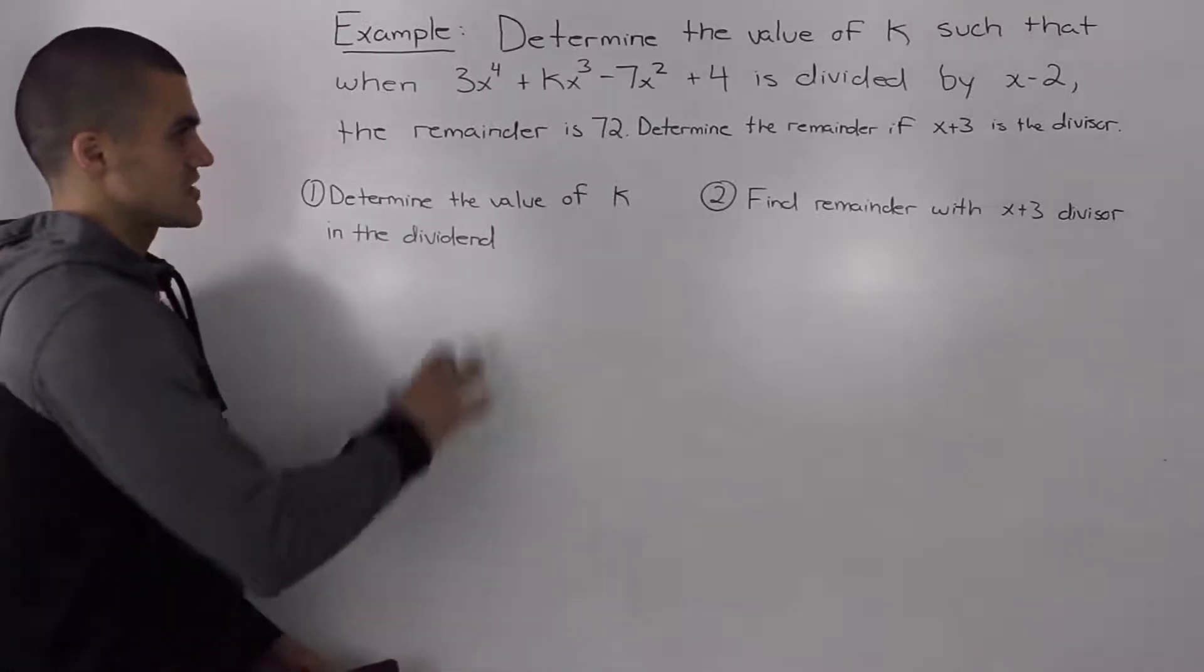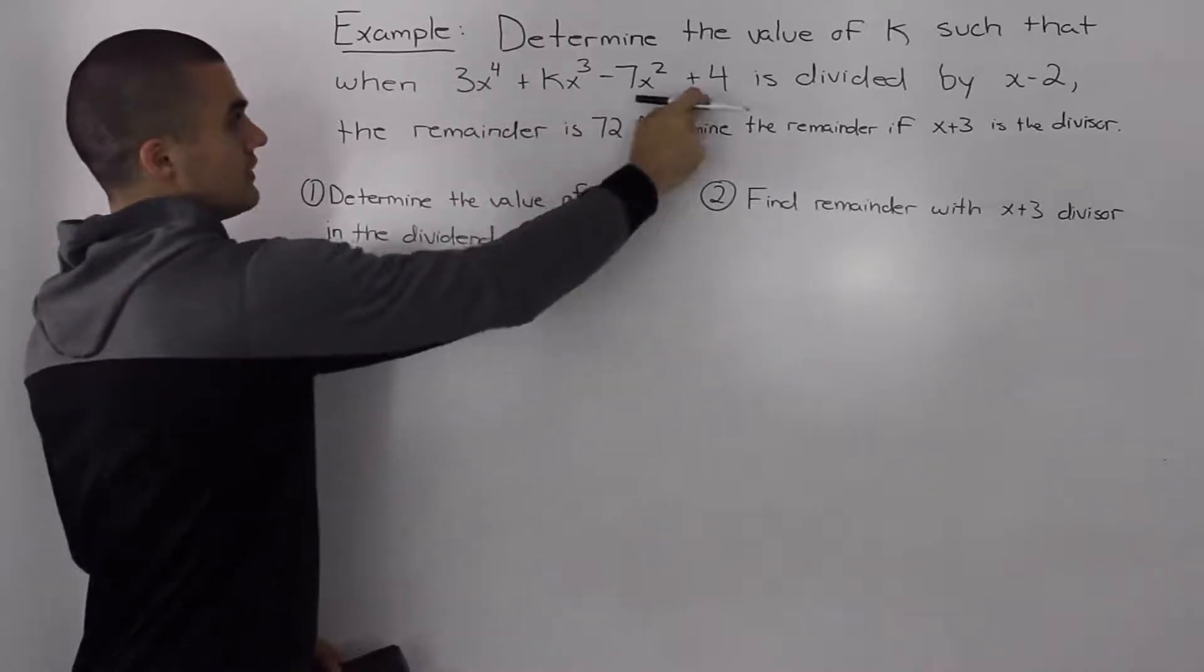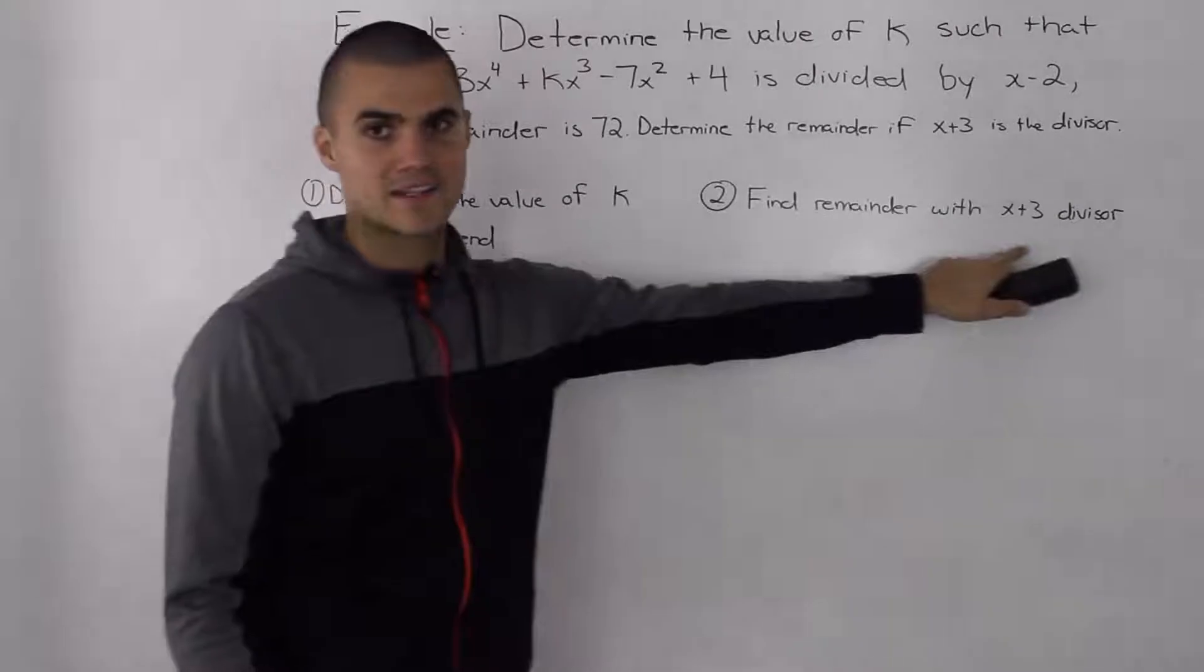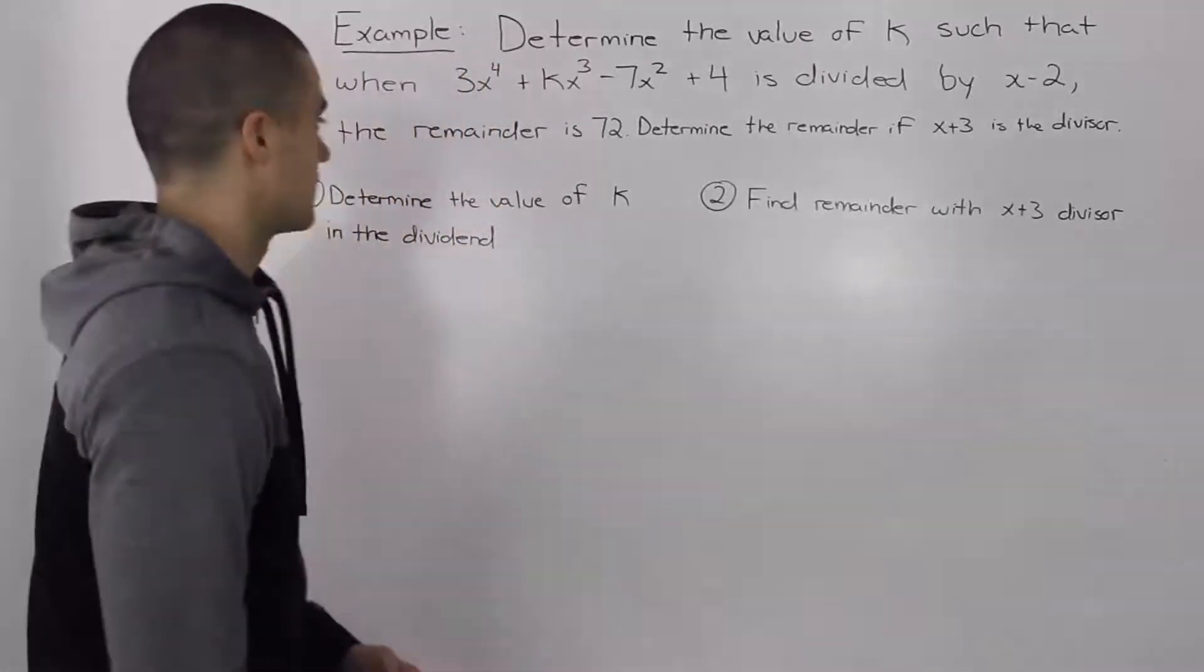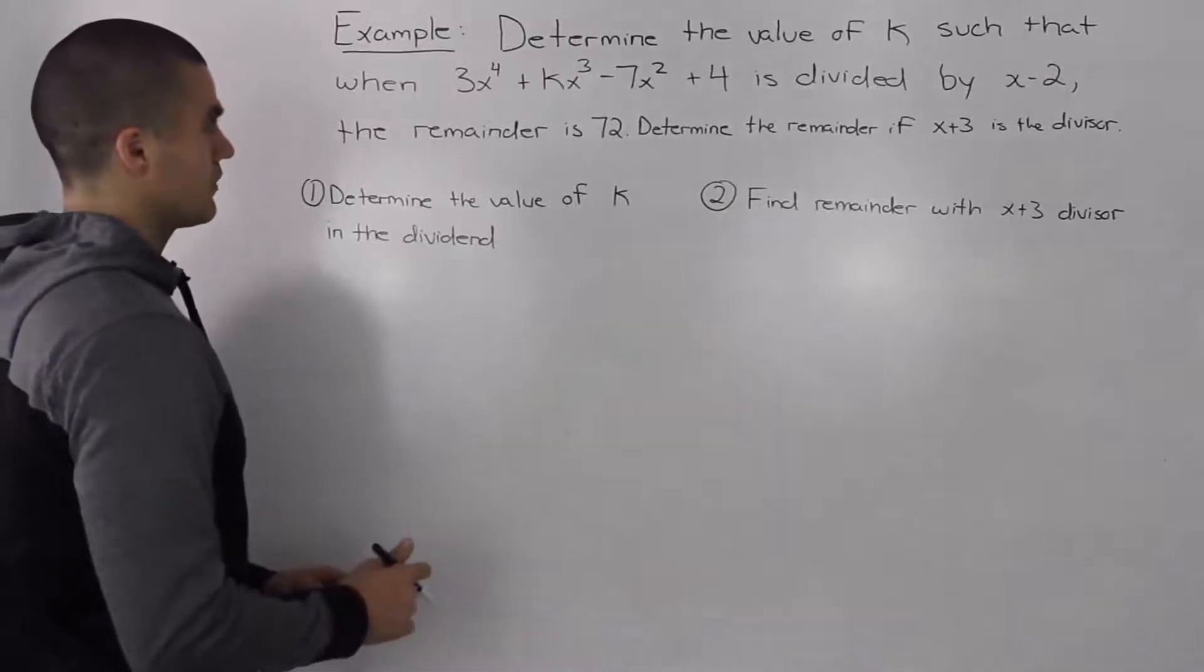So this question is split up into two parts. First we have to find the k value in our dividend and then we have to find the remainder with that dividend when x plus 3 is the divisor.